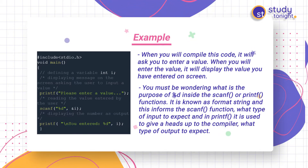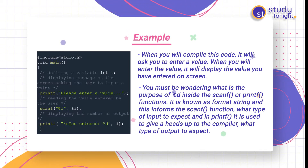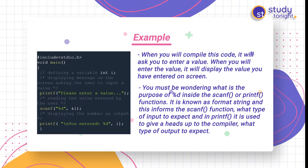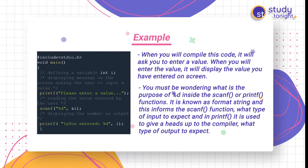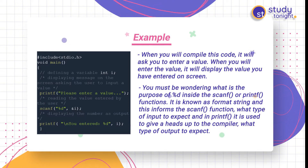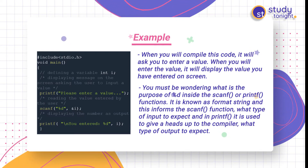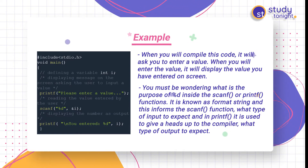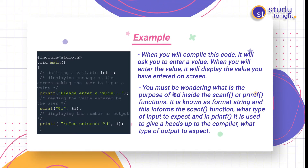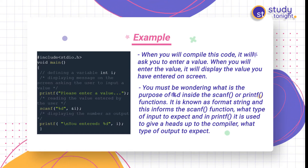Whatever value the user enters will be displayed by the printf function using %d, reading the value stored in variable i. When you compile this code it will ask you to enter a value, and then it will display the value you have entered on the screen. The %d inside scanf or printf is known as a format string. This informs the scanf function what type of input to expect, and in printf it gives the compiler a heads up on what type of output to expect.